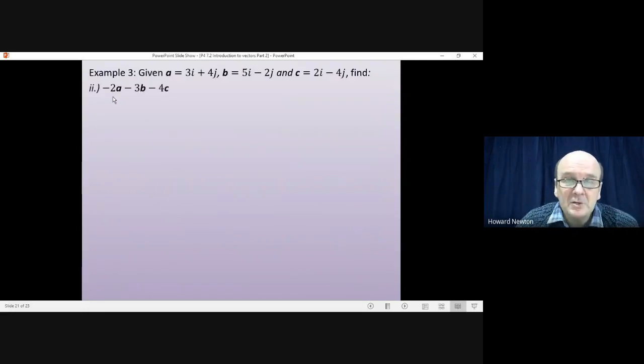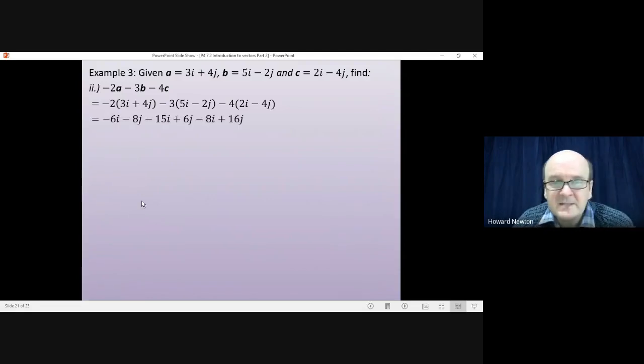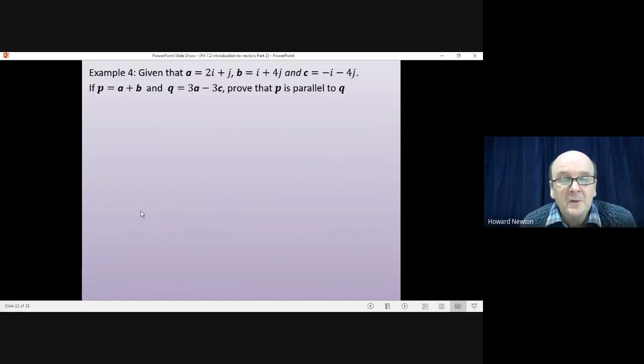Second question. Lots of minuses. Minus 2 times a. Minus 3 times b. Minus 4 times c. In ij notation we would have this. Multiplying out the brackets will give us that. Collecting the i's and j's together will give us minus 29i plus 14j. And writing that as a column vector we'll have minus 29, 14.